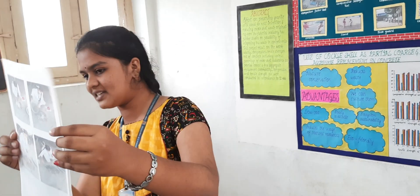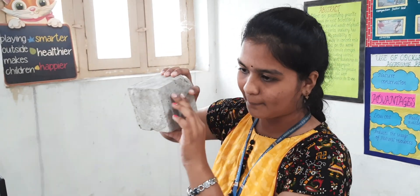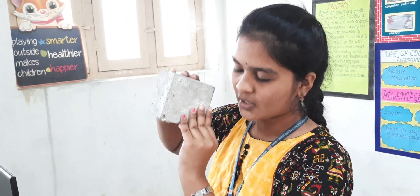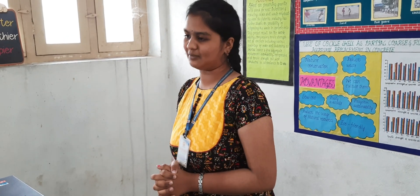Firstly, for making this project, I have collected some sand, some cement, some chips, and cockle shells, and I have mixed them up and made some cubes. This is the cube made by me by replacing the aggregate with cockle shells. For making this cube, I have replaced the aggregate at 5%, then 10%, 15%, 20%, 25%, up to 30%. At 25%, I got the perfect consistency of the concrete mixture.